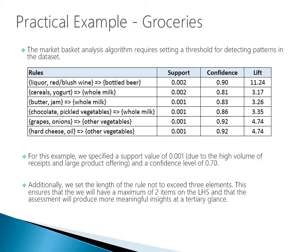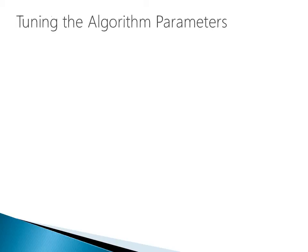Notice in this example the lift values are all very high. In particular, we have one with a lift of 11.24, and the others are somewhere in the three to four range. As mentioned earlier, having lifts greater than one is important in ascertaining whether the rule makes business sense.